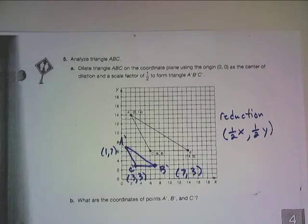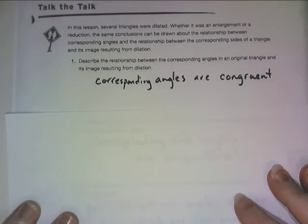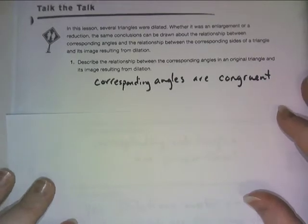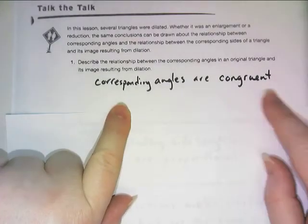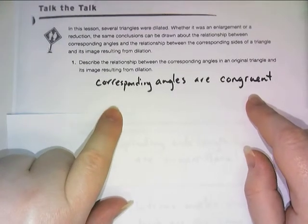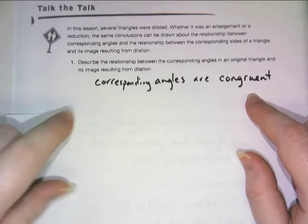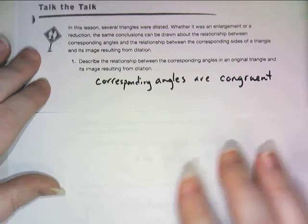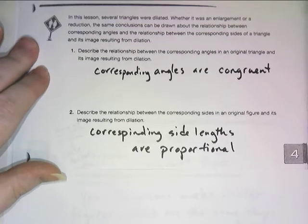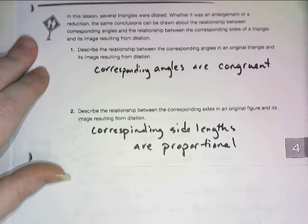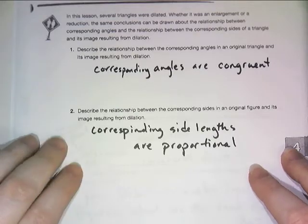Now let's look at the answers to your talk-to-talk questions. For the first question, right, the relationship between dilated figures, these corresponding angles and dilated figures, is that they're congruent. Because when you're dilating a shape, you're creating similar figures. So all those rules we learned about similar figures still apply here. That includes on number 2, that our corresponding side lengths amongst our dilated figures are going to be proportional.